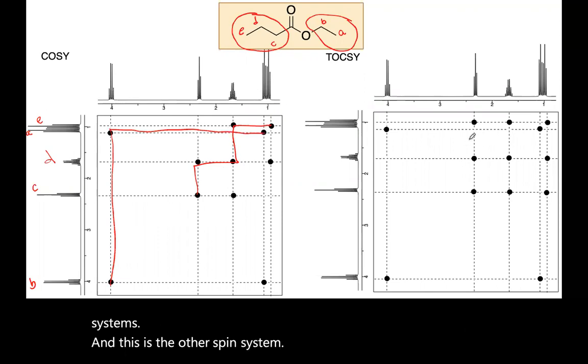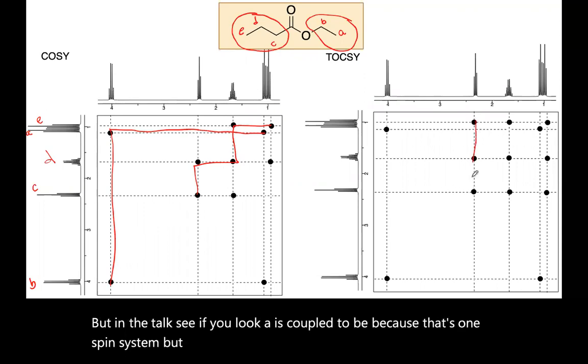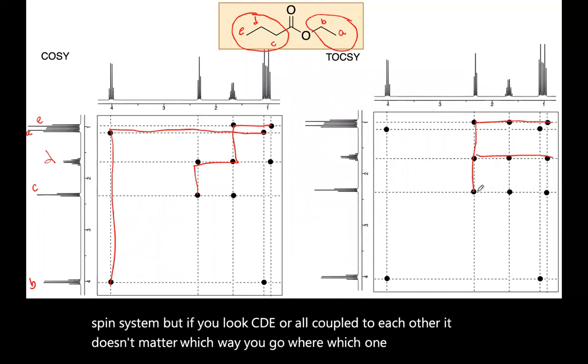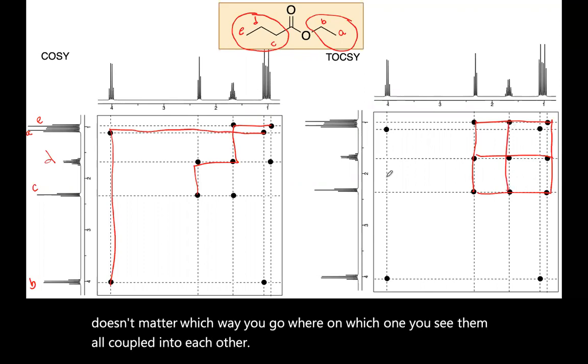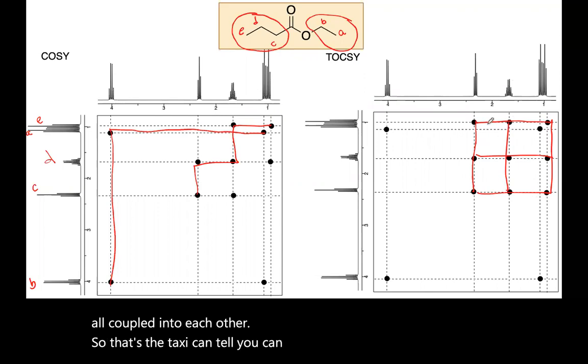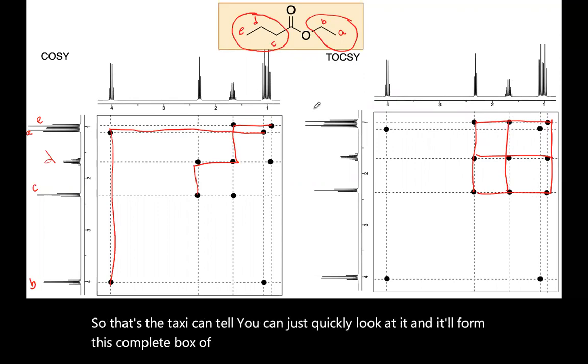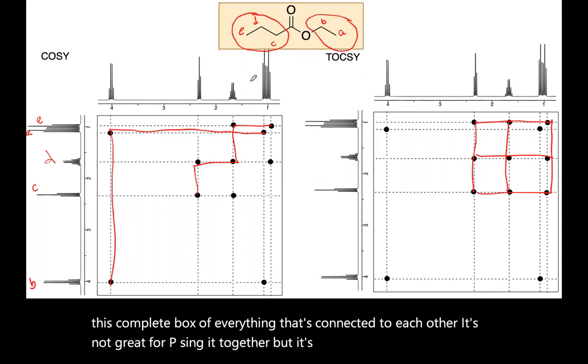But in the TOCSY, if you look, A is coupled to B because that's one spin system. But if you look, C, D, E are all coupled to each other. It doesn't matter which way you go or on which one you see them all coupled into each other. So that's the TOCSY can tell you, you can just quickly look at it and it'll form this complete box of everything that's connected to each other. It's not great for piecing it together, but it's quick to identify a spin system.